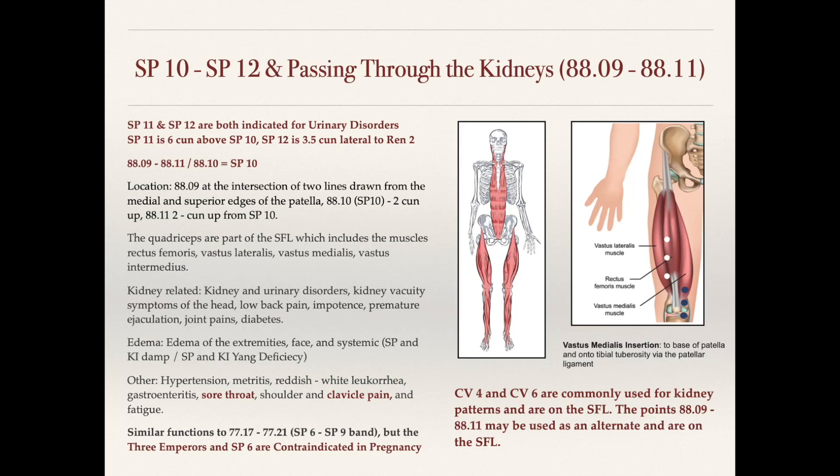Welcome to the next section on the superficial front line. Here we're going to speak about the spleen meridian, this region from spleen 10 to spleen 12, and this overlaps with some Master Dung points that are numbered 88.09 through 88.11. They're otherwise known as the passing through kidney points.